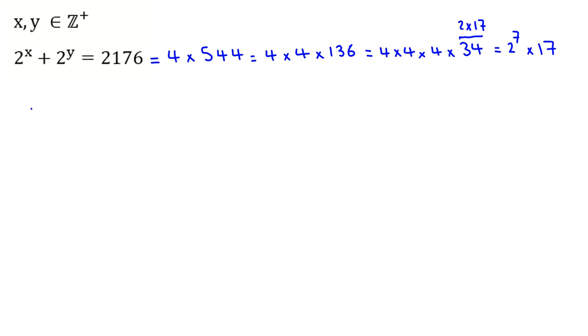Here we can say without loss of generality, because it is symmetric with respect to x and y, suppose x is less than or equal to y. So y is x plus k, where k is at least 0.